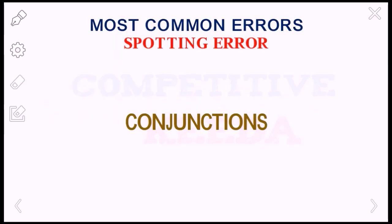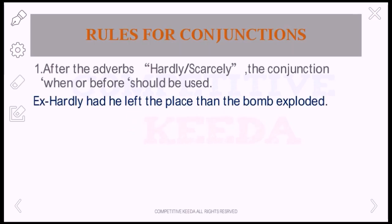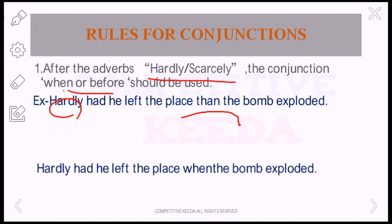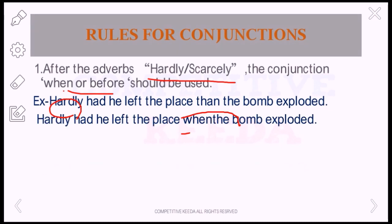So we are done with the noun part for today's episode. We will give more examples in the next part. Now we will move to the conjunction part, which is very important because people commit a lot of mistakes here. The first rule: after the adverbs 'hardly' and 'scarcely,' the conjunction 'when' or 'before' should be used. For example: 'He hardly left the place, then the bomb exploded.' Using 'then' is wrong here. The correct form is: 'He hardly left the place when the bomb exploded.'